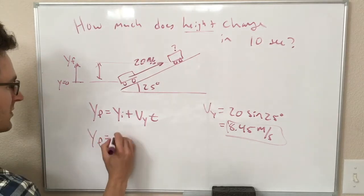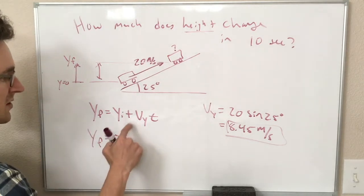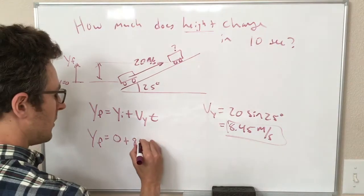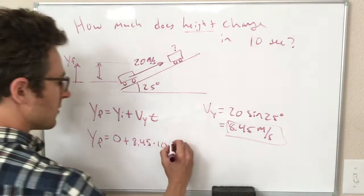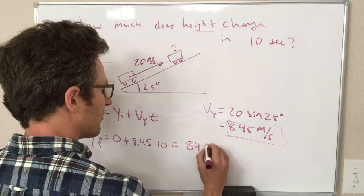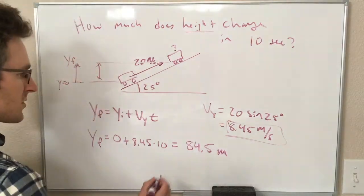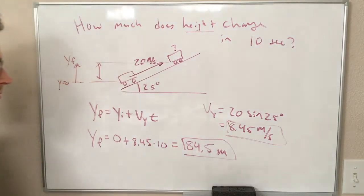And y final is equal to 0 then, plus Vy, which we know, 8.45 times 10, so that is 84.5 meters above where it started.